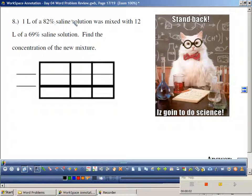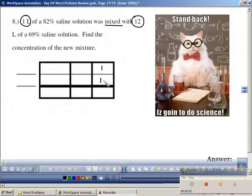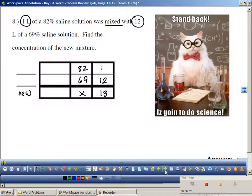1 liter of 82% saline solution was mixed with 12 liters. What's being mixed? 1 liter and 12 liters. What's the percent of the 1 liter? 82. And what's the percent of the 12? 69. Find the concentration of the new mixture. What's this total? 13. Multiply across. Write your equation.